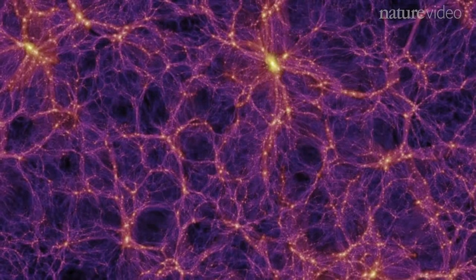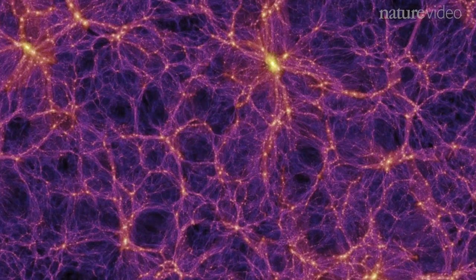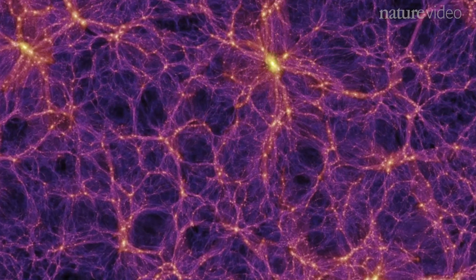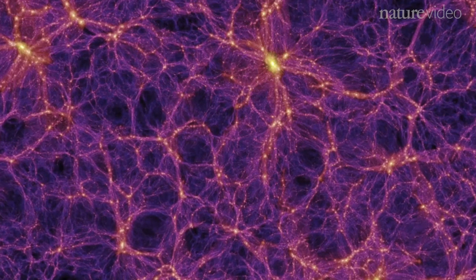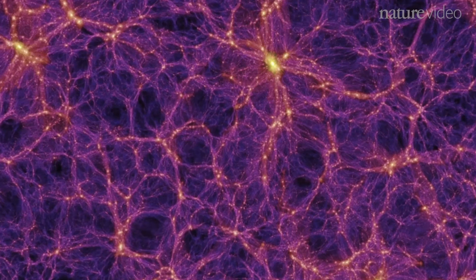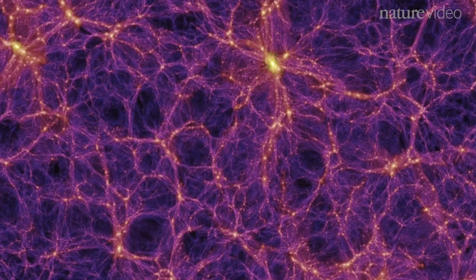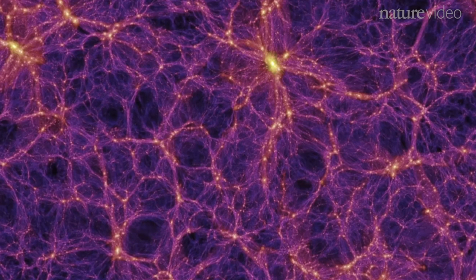In our segment on the Cosmos in the How Far Away Is It video book, we covered how, on the widest scale, the universe forms a web of galaxies surrounding great voids, and that the web filaments are galaxies grouped into superclusters.